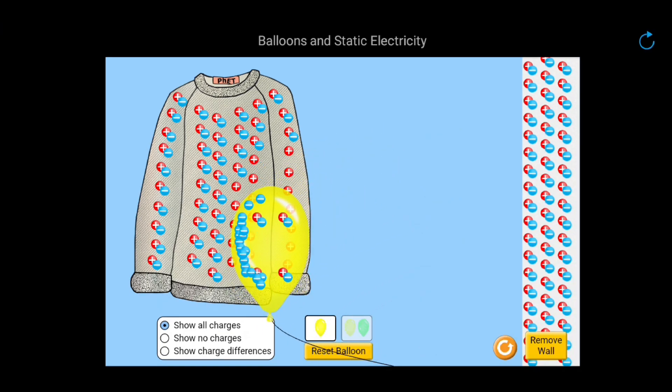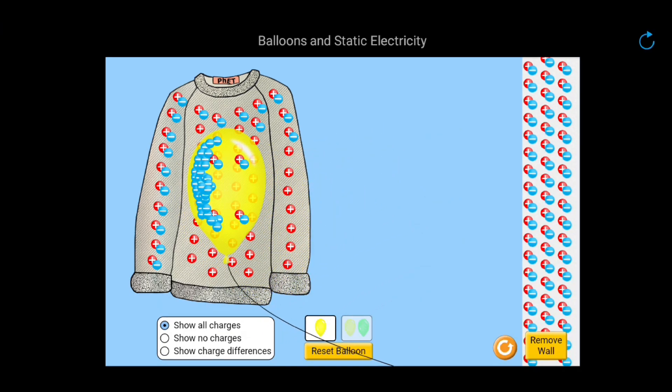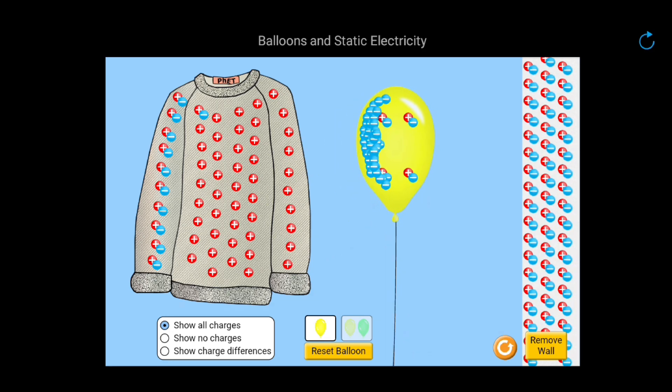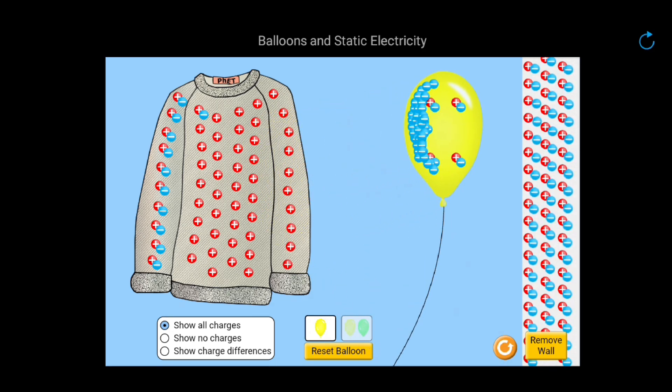When we rub a balloon with a cloth, something amazing happens. The balloon gains a negative charge. What's actually happening is that some electrons from the cloth transfer onto the balloon, leaving the balloon negatively charged.